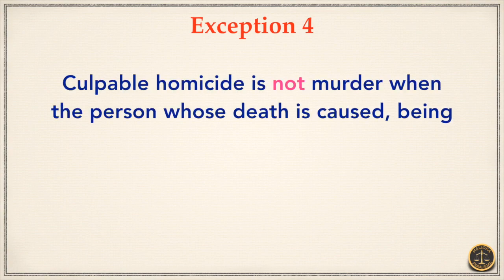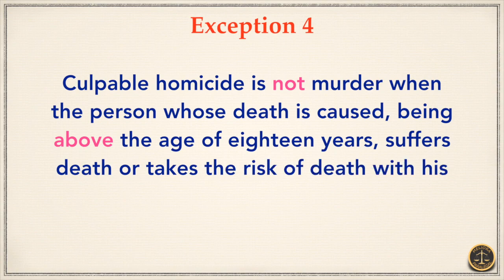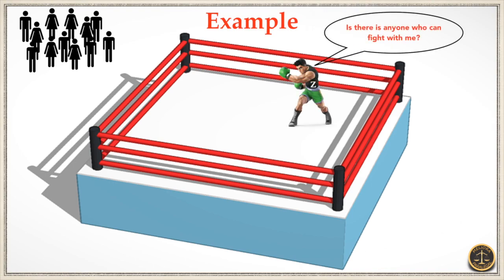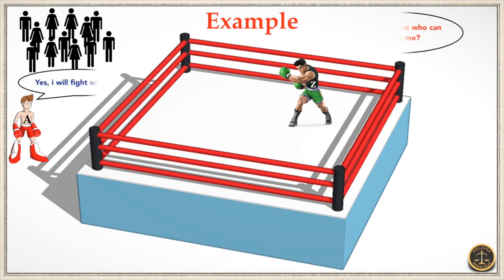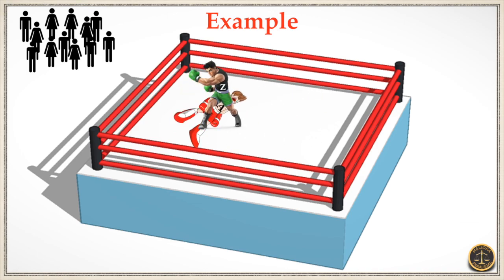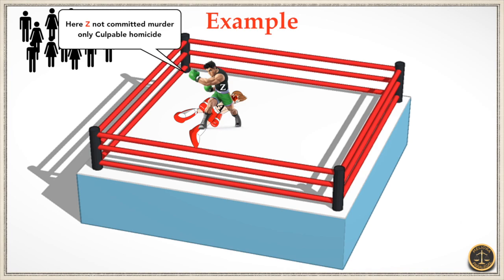Exception 4. Culpable homicide is not murder when the person whose death is caused, being above the age of 18 years, suffers death or takes the risk of death with his own consent. For example: A, a 22-year-old man, gets excited because of Z's words and enters a boxing ring. A receives a powerful hit on his head and dies on the spot. In such a case, though Z had instigated, A is an adult person and became ready for boxing with his own consent. Therefore, Z has not committed murder but only culpable homicide.